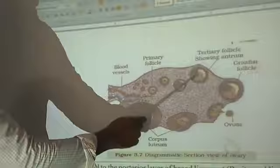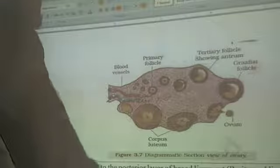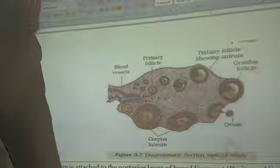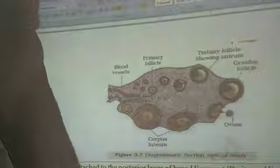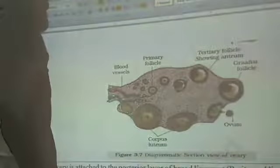Inside the tertiary follicle, the primary oocyte divides and completes meiosis I to become a secondary oocyte. After that, the tertiary follicle becomes a fully mature follicle, called the Graafian follicle.